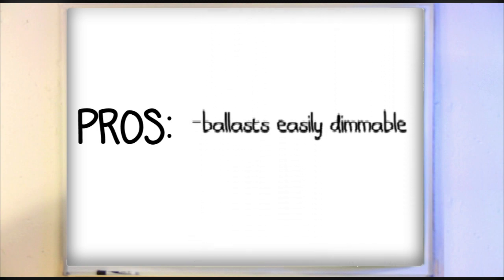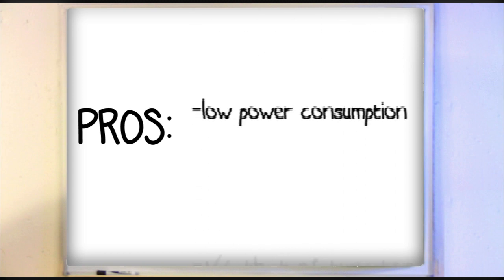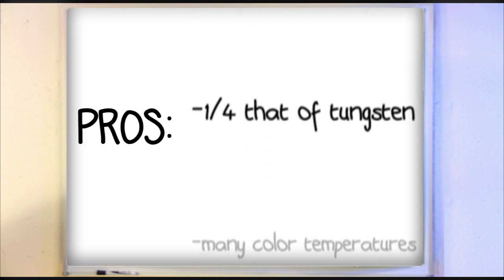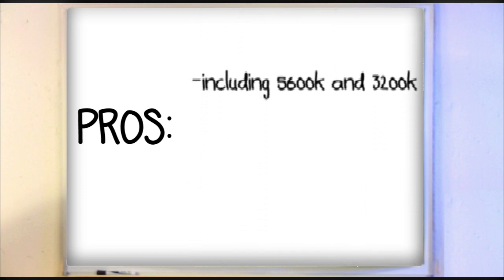Some ballasts are easily dimmable but there is some color shifting. They have a low power consumption about one quarter of a tungsten bulb. There are many color temperature options including 5600K and 3200K.